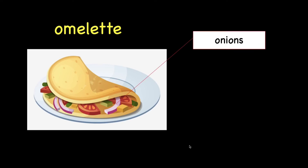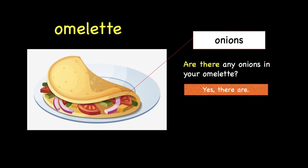Onions. Onions are also countable nouns, which means you can count one, two, three. So, we can say: "Are there any onions in your omelette?" If there are, you can say: "Yes, there are." If there aren't, you say: "No, there aren't." Mr. Pui wants to ask you — are there any onions in your omelette? Let's check the answer. Correct — there are onions in our omelette. Let's move on to the next one.